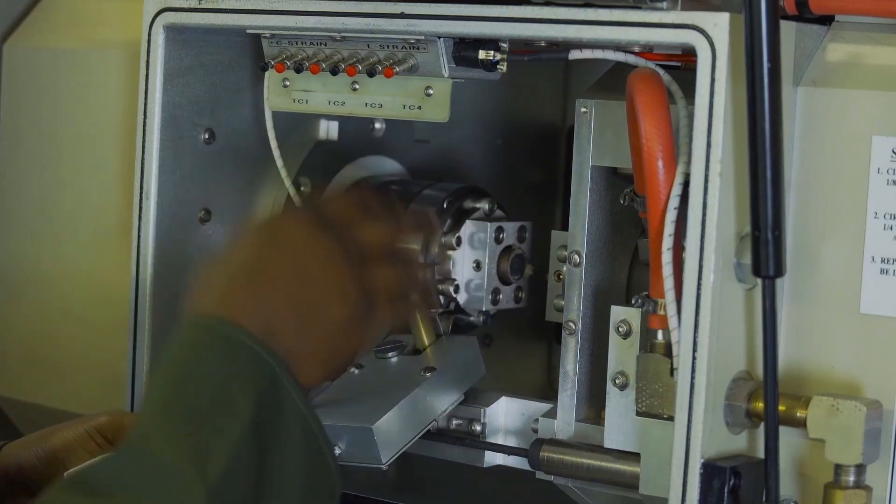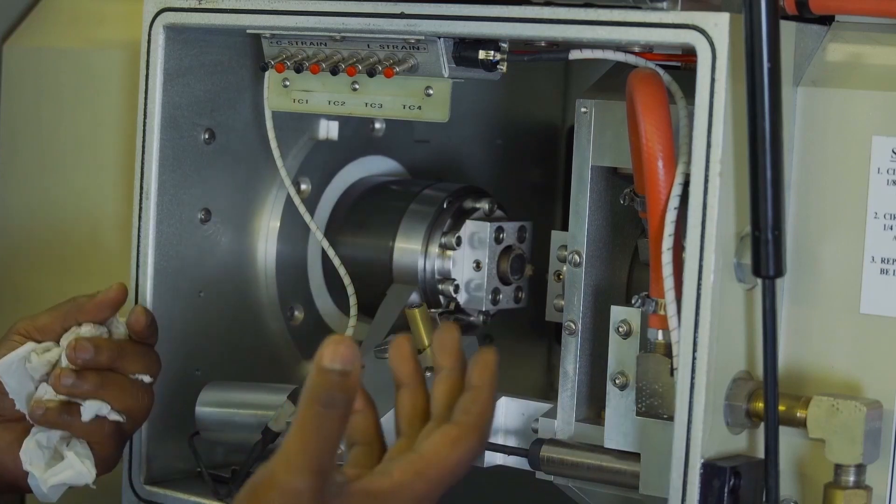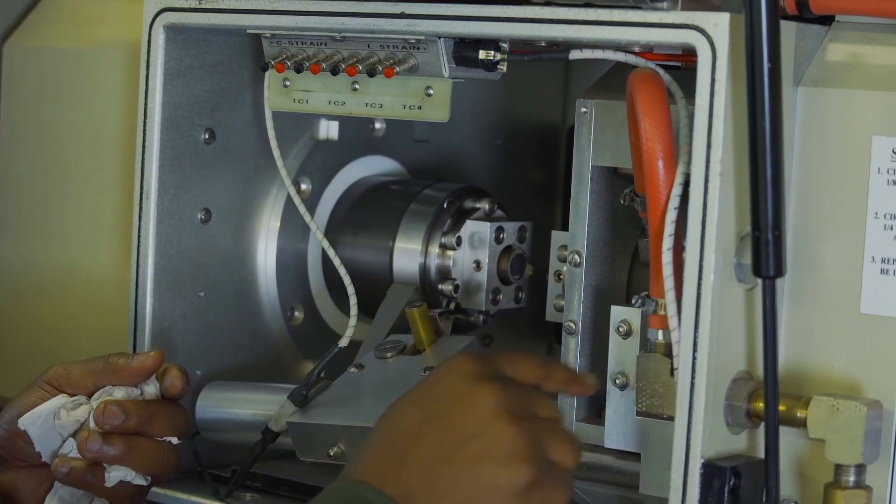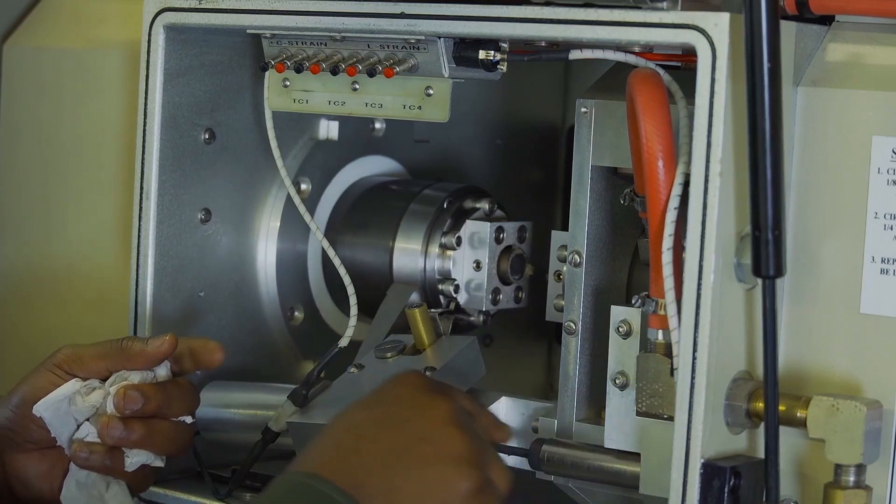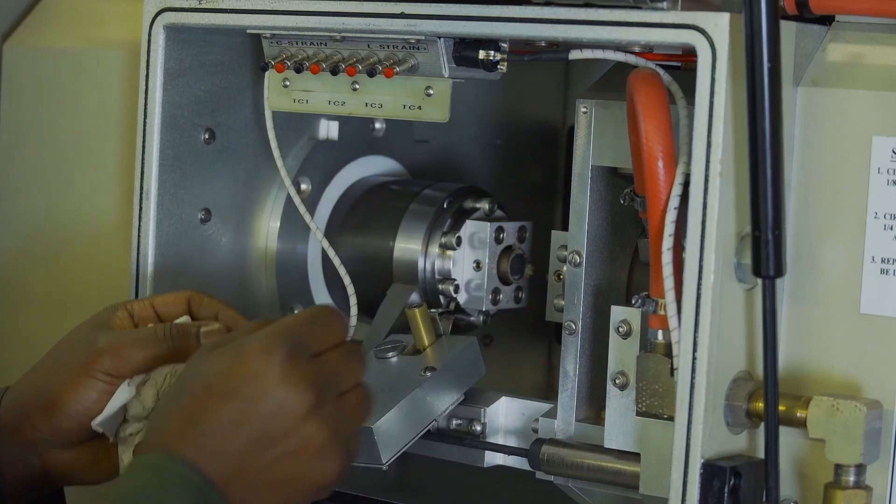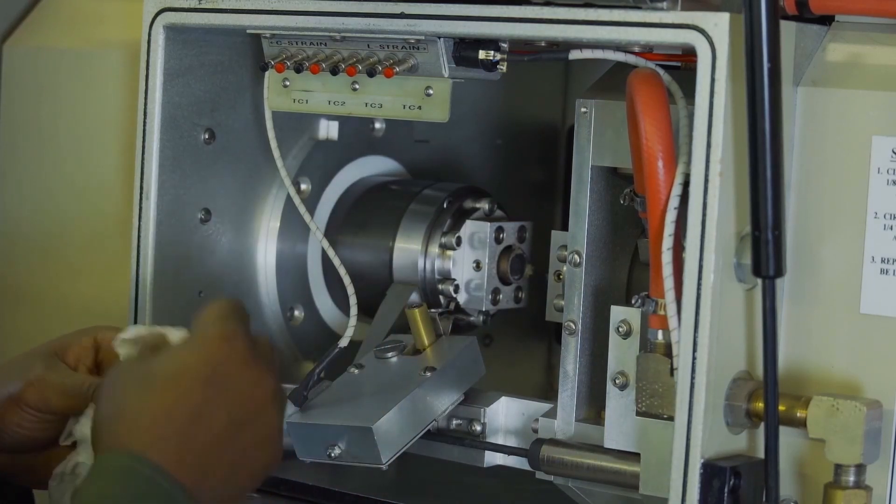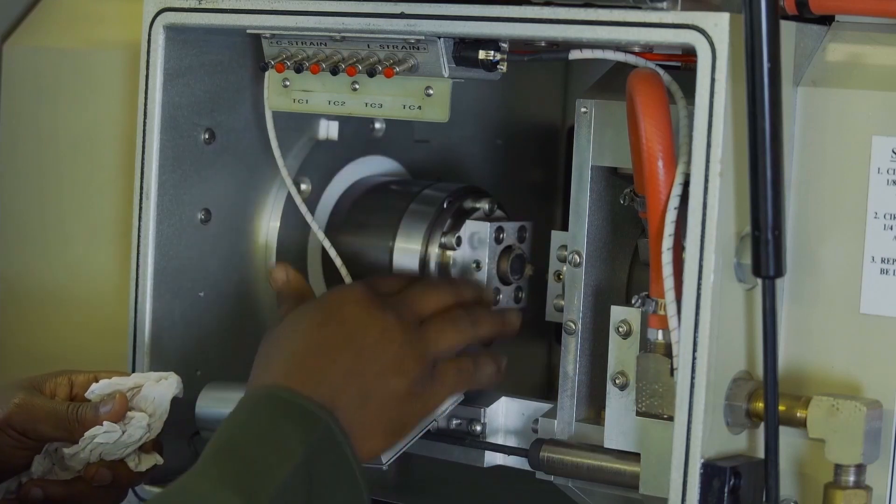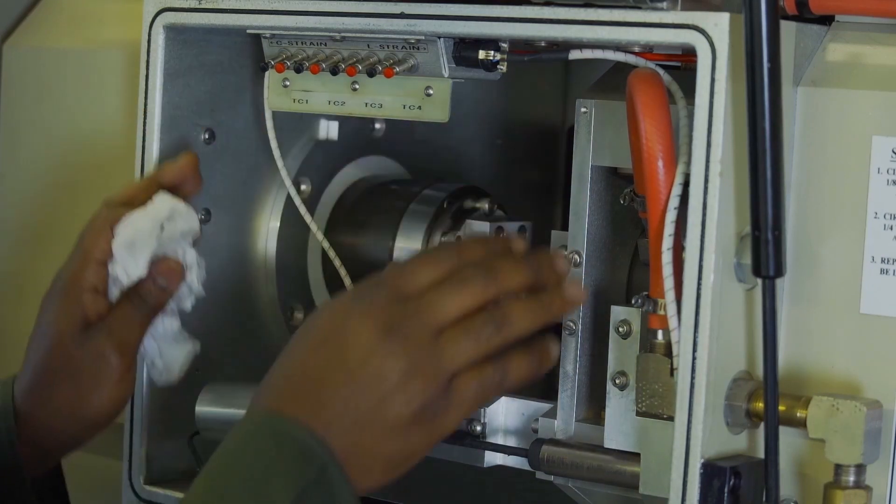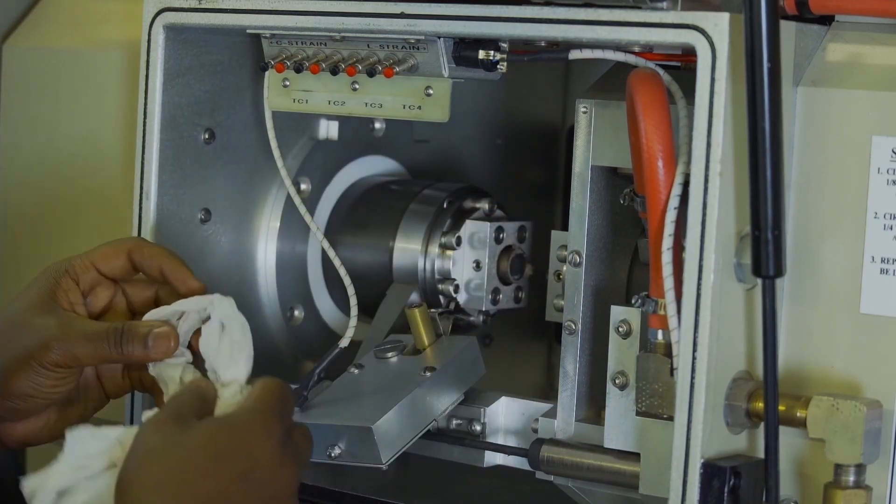We also have a transducer, in simple terms we call it LVDT. Basically this transducer measures the strain of the sample during deformation. I will be loading the aluminum sample now on the auto loader and set up for the experiment. The first thing I would like to do is to clean the anvils.